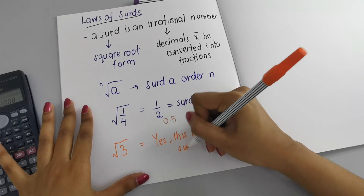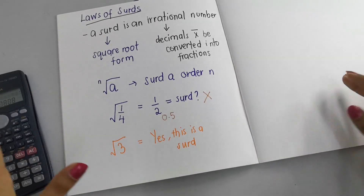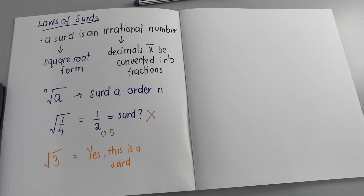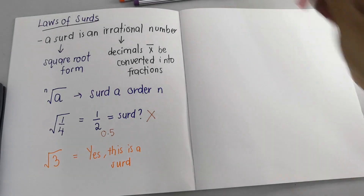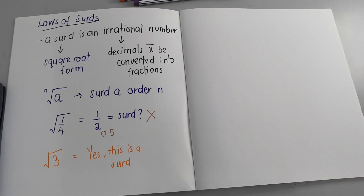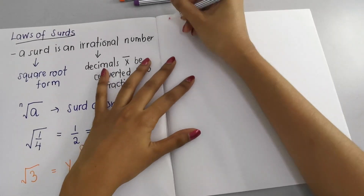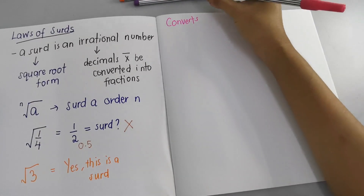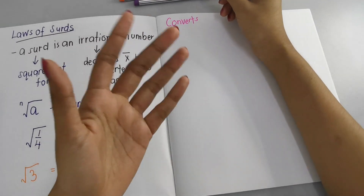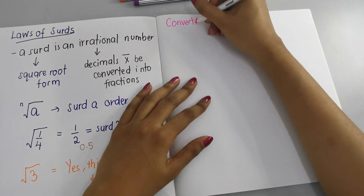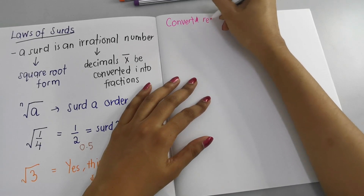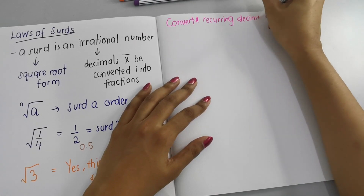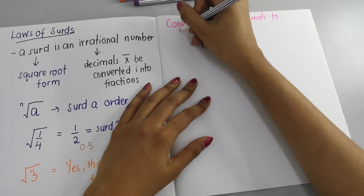I hope you understand — this is the basic for knowing what is a surd and what is not a surd. Make sure you always remember what rational and irrational numbers are. Now I'm going to guide you on how to convert recurring decimals to fractions.